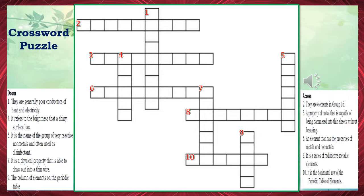Number 6: An element that has the properties of metals and non-metals. The correct answer is metalloid. Number 8: It is a series of radioactive metallic elements. The correct answer is actinide.